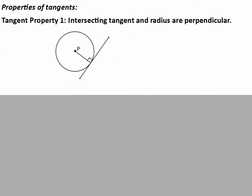Let's examine first some properties of tangents. Tangent property number one: intersecting tangent and radius are perpendicular. You see in this picture, this line is a tangent because it is only touching at the point of tangency, and here is a radius. When a tangent intersects with a radius, they will intersect at a right angle — they will be perpendicular.